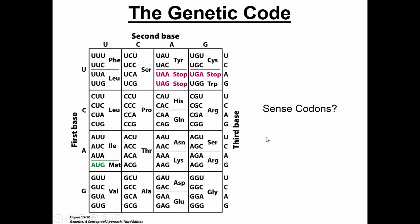Any three bases of RNA is called a codon. If they encode for an actual amino acid, it's called a sense codon. Pretty much everything here is a sense codon except for three options. If something doesn't encode for an amino acid, it has to encode for a stop codon. You see UAA, UAG, and UGA — those three are stop codons, and we call those nonsense codons. If it encodes for a stop, it's nonsense. Any other amino acid is called a sense codon.